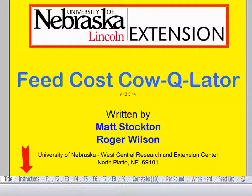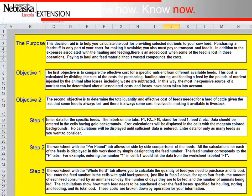The second tab is the instructions tab. You'll notice the purpose and objectives for the cow cost calculator. The purpose is to calculate the cost for providing selected nutrients to your cow herd. To do this, we're going to compare the effective cost for specific nutrients from different available feeds, as well as determine the total quantity and effective cost of feeds needed for a herd of cattle. There are also three steps at the bottom to help you navigate through the tabs of the feed cost calculator.